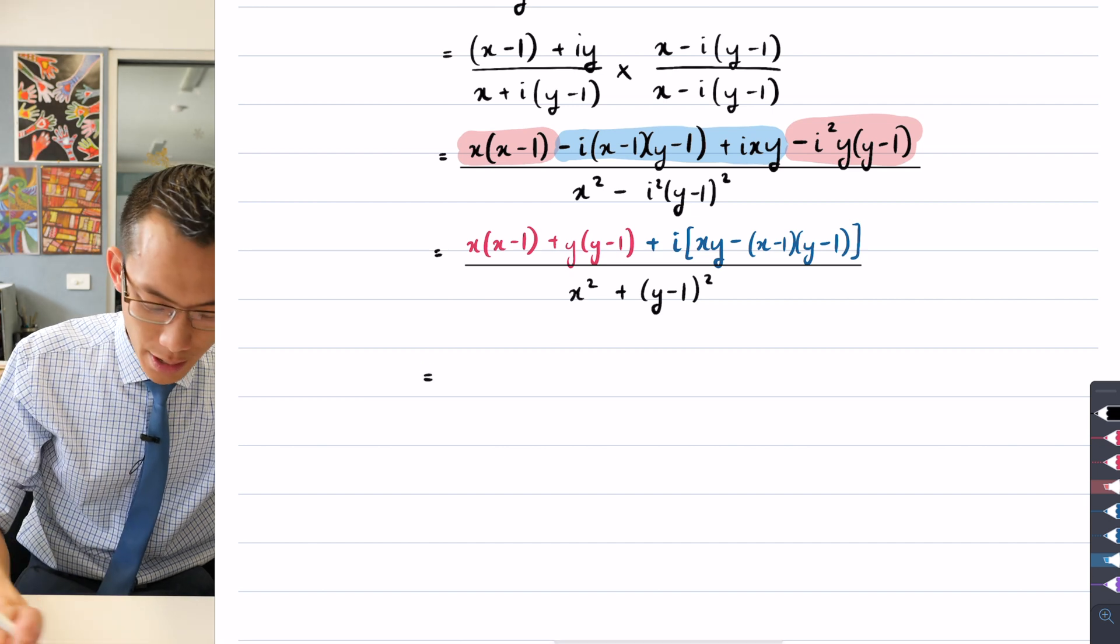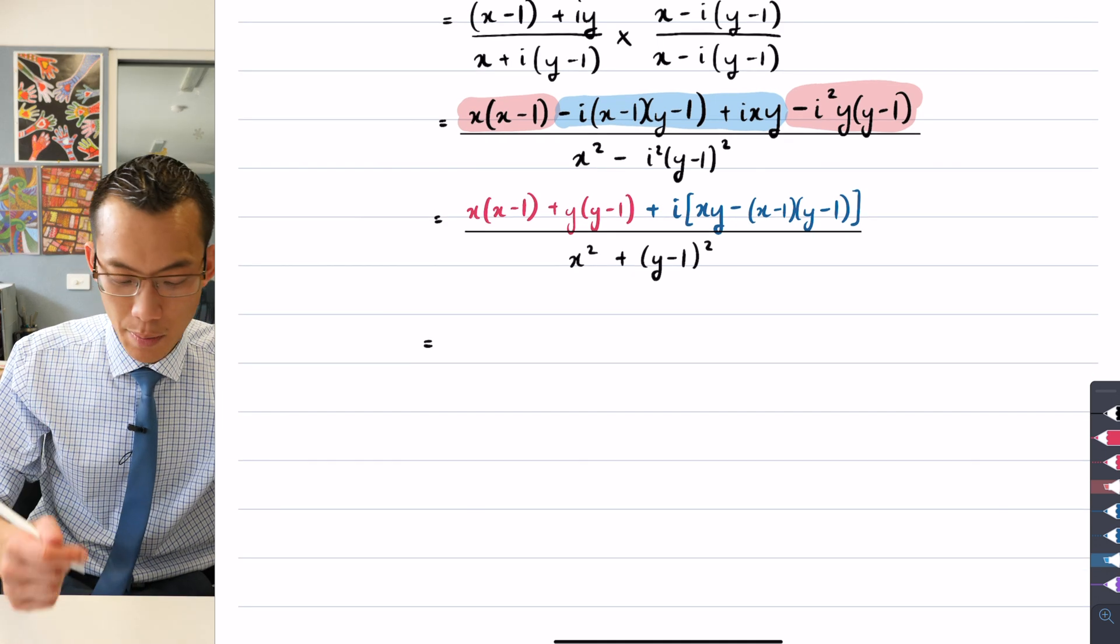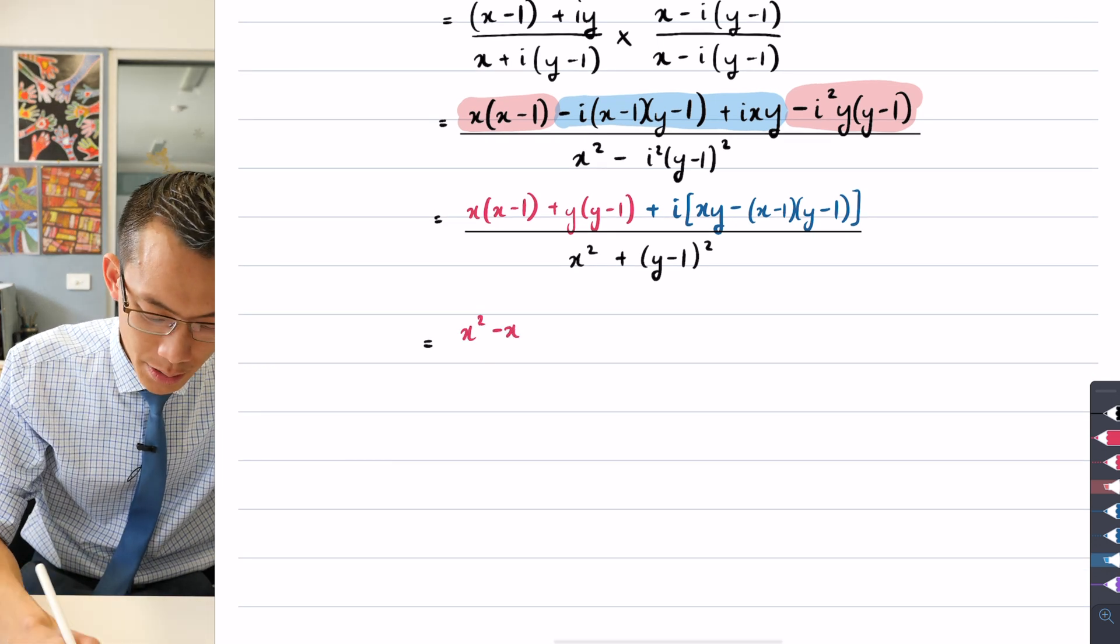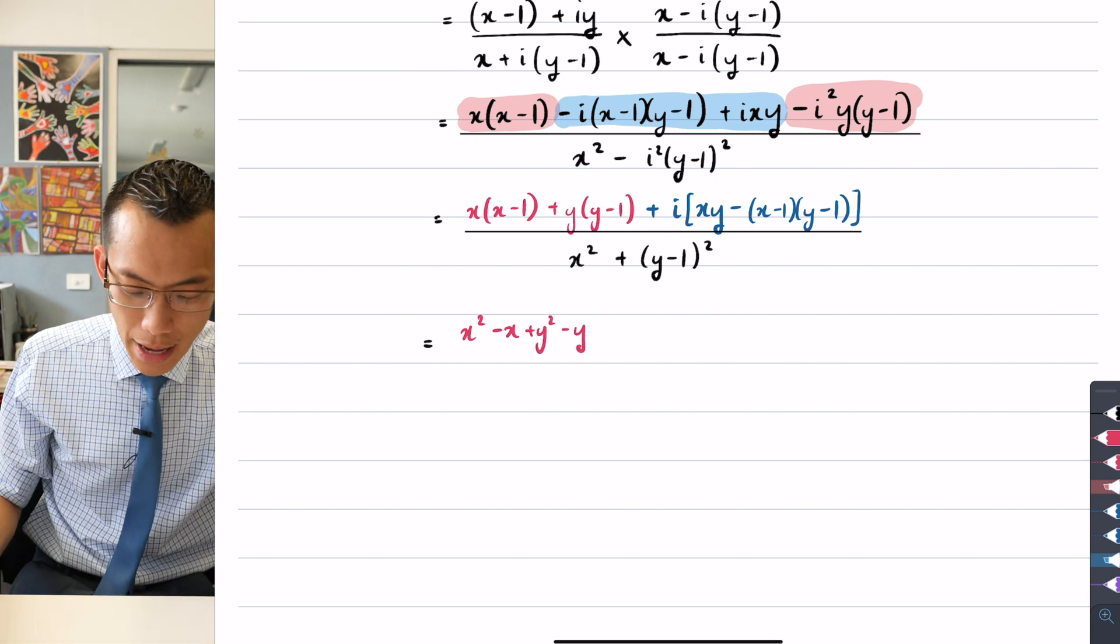What I can do, for instance, is I can say well on the left hand side I can actually expand this all out, right? I get x squared minus x plus y squared minus y.